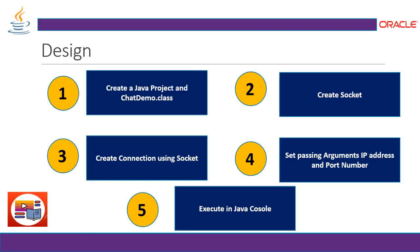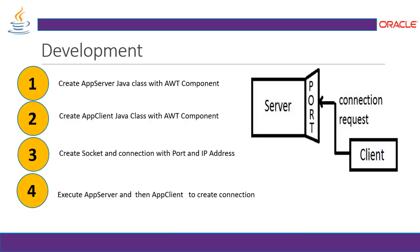The design of this application is going to be in five blocks. Number one, we create the Java project and create a class for the server and client. Number two, we create the socket connection — creating a connection using socket and passing the arguments: IP address and port number, and execute it in the Java console, or you can use AWT which is optional.